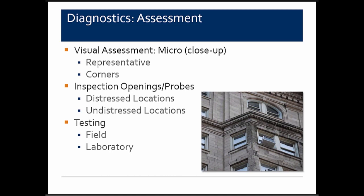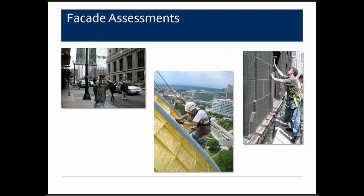Close-up inspection looks at representative conditions, focusing on corners. Importantly, inspection openings — or 'probes' as our east coast colleagues call them — are examined in both distressed and undistressed locations. Testing options include both lab and field testing. Access methods include rope access, crane, swing stage, pipe scaffolding, mast climbers, and personnel lifts.